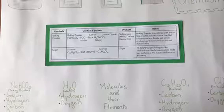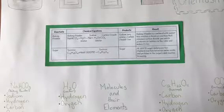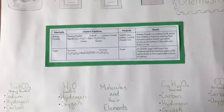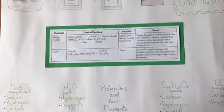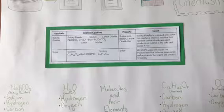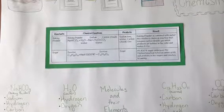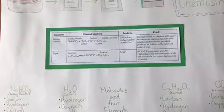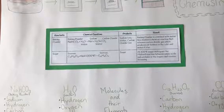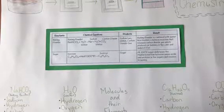First is baking powder. Baking powder's chemical equation is basically baking powder, when mixed with water, turns into sodium plus water plus carbon dioxide. The product of this is sodium ions, water, carbon dioxide gas. The result of this is baking powder is combined with water, and this creates a chemical reaction that releases carbon dioxide gas, which produces air bubbles in the cake and makes it rise.